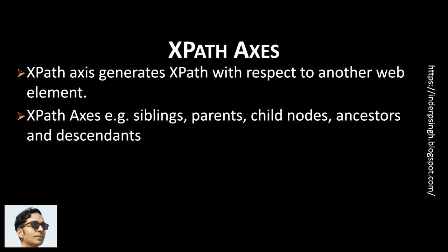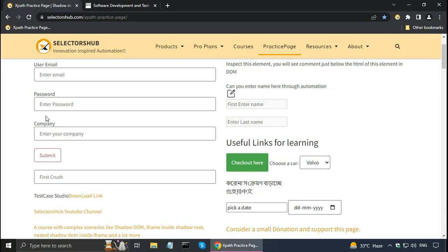The next topic is XPath Axis in Selenium or other tools. An XPath Axis (singular) is useful when you cannot get a unique or static XPath for a web element — it generates XPath with respect to another web element, called the parent in Selectors Hub. XPath Axes (plural) include siblings, parents, child nodes, ancestors, and descendants. On the Selectors Hub practice page, imagine finding the XPath for the password input box is difficult because it may be dynamic or have a very long XPath. We can use XPath Axis in Selectors Hub instead.